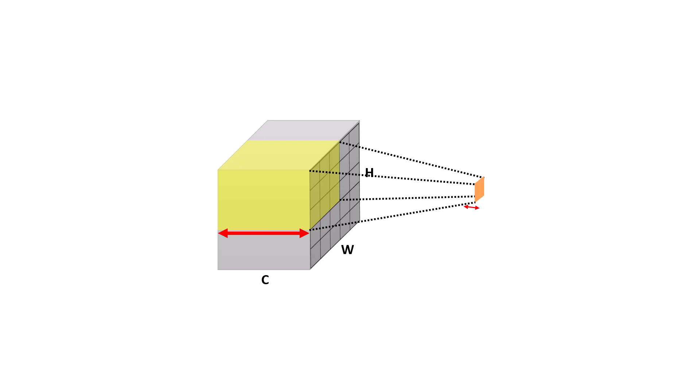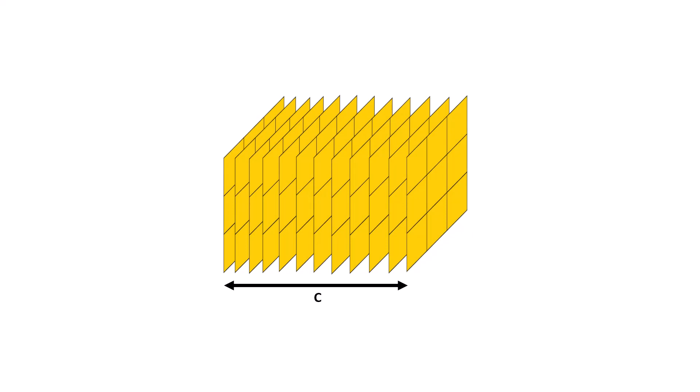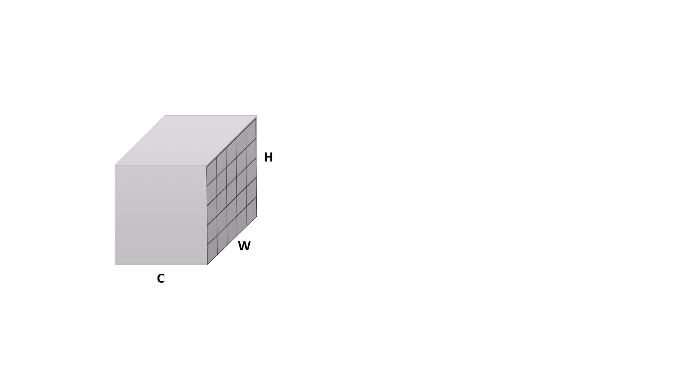So the way the authors here propose to improve the performance is that, first, we need to have a different view for convolutions, which is a set of two-dimensional kernels. And having this view, when we have our input channel, let's see how we can apply the kernels.